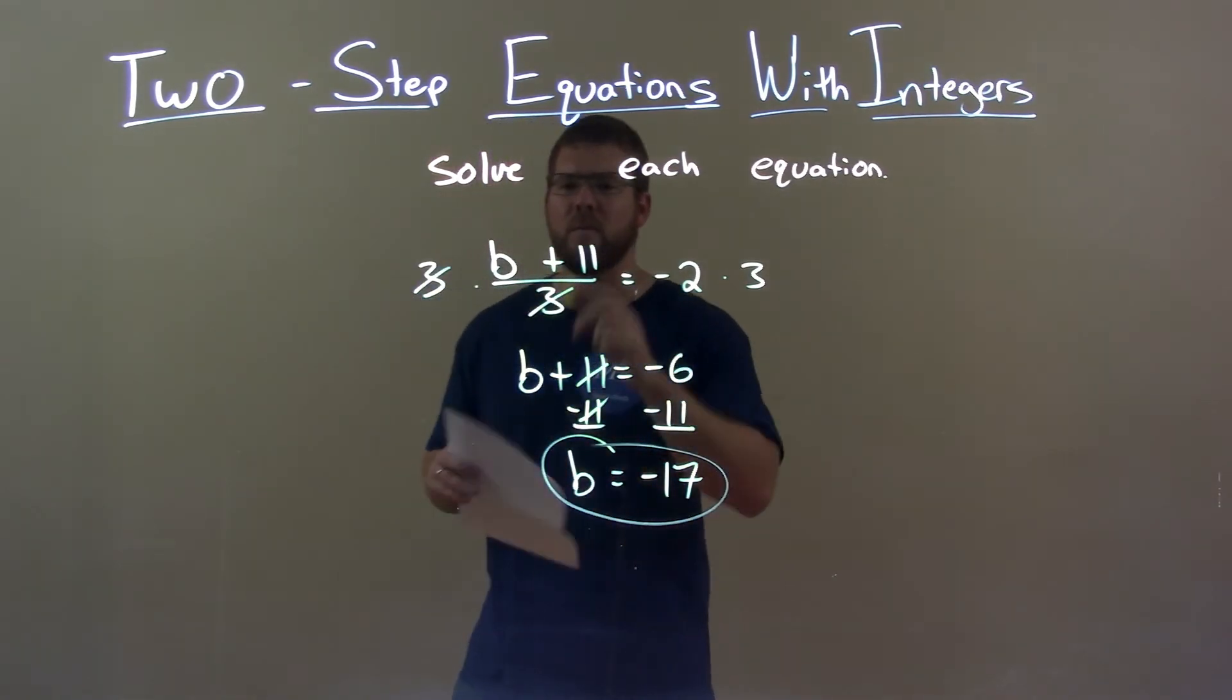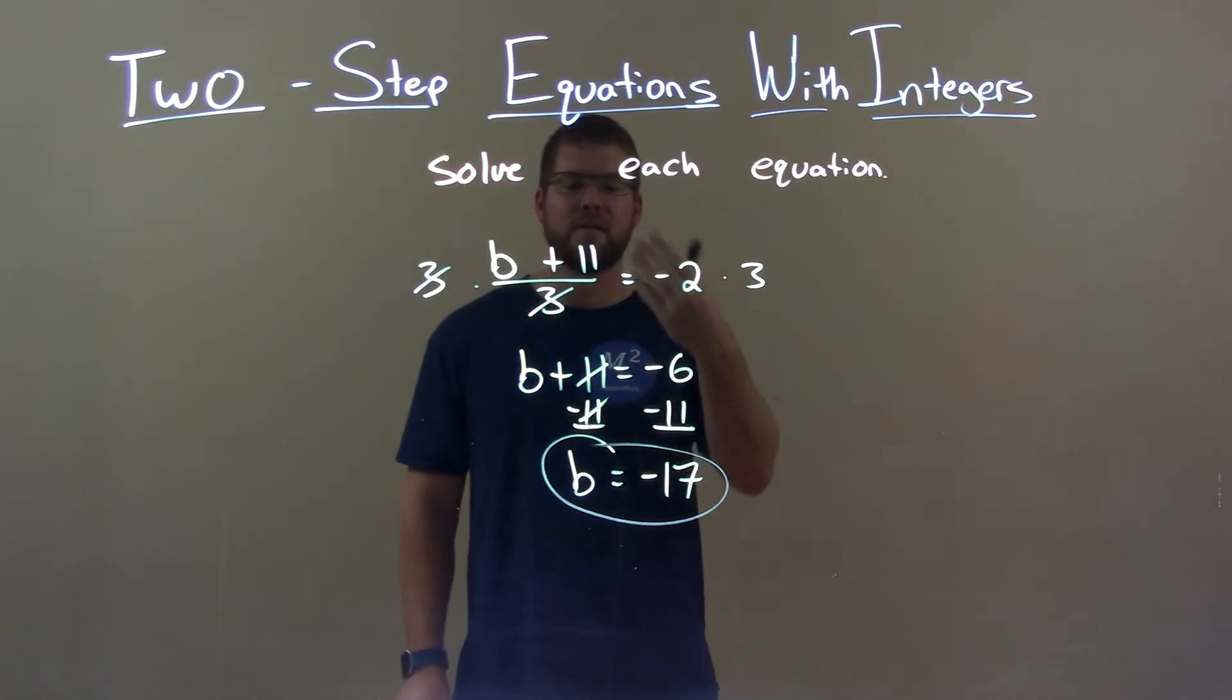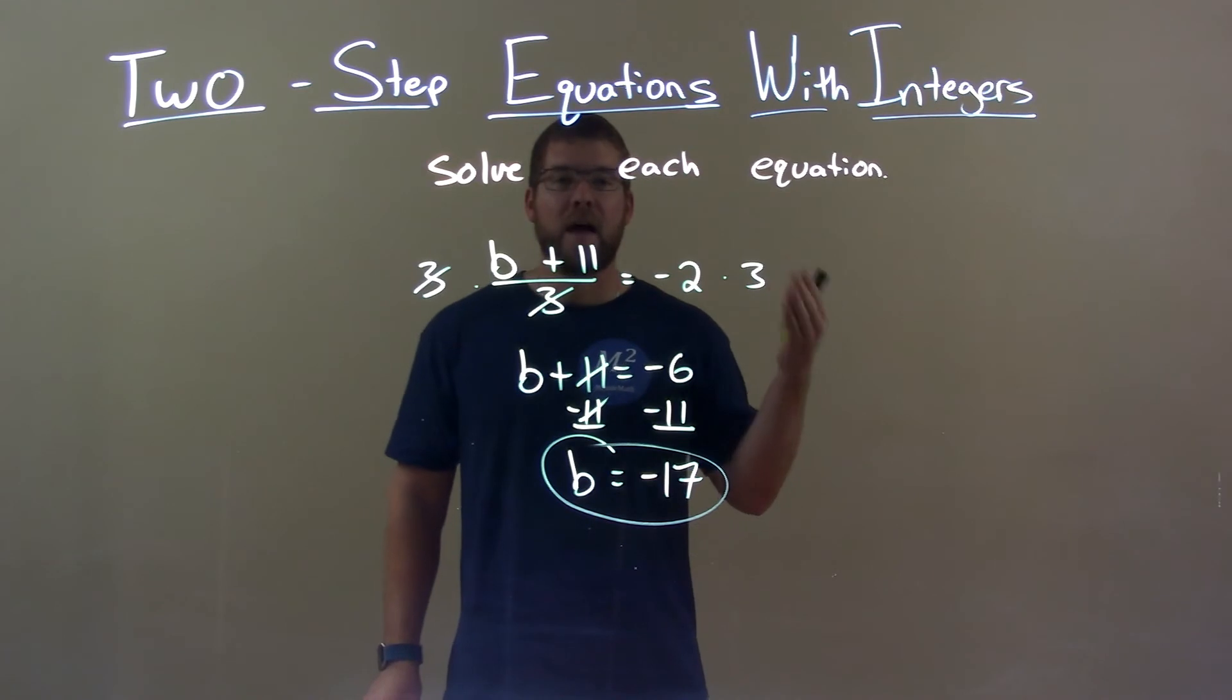Quick recap: we're given b plus 11 over 3 equals negative 2, and we just solved for b. Multiply 3 to both sides, then subtract 11 from both sides. That gave us our final answer of b equals negative 17.